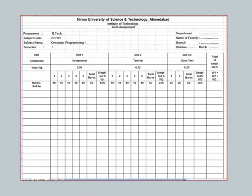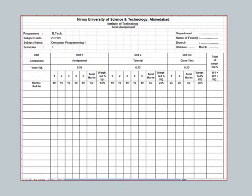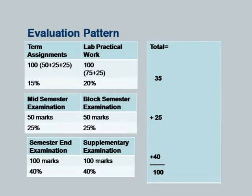The term assignment breakdown: five assignments each carrying ten marks, giving a total out of 50, with a component weightage of 0.50. For tutorials, five tutorials of ten marks each, with a weightage of 0.25. Two class tests are held, with a weightage of 0.25. These together make 100, from which 15 percent is taken as the term assignment component.